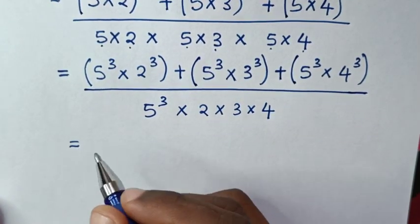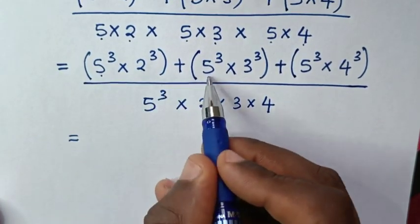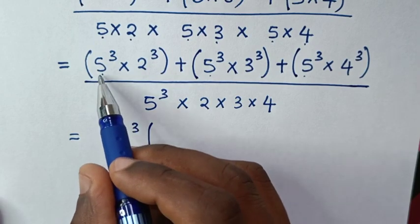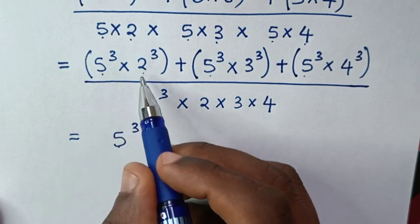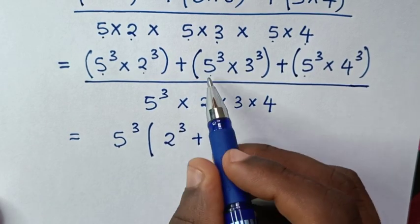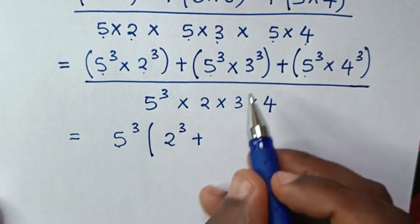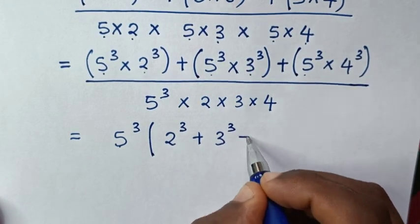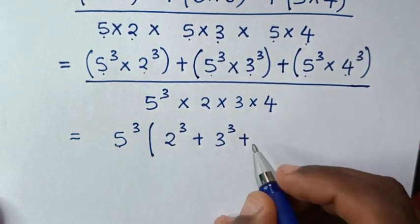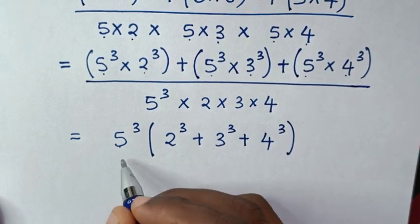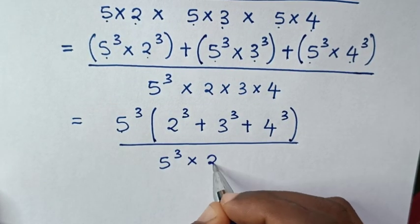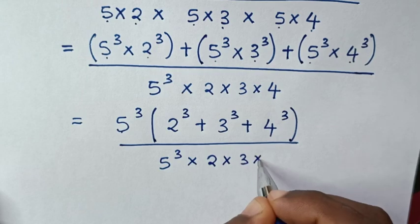In the next step, each numerator term has 5 power of 3 times 2 power of 3, plus 5 power of 3 times 3 power of 3, plus 5 power of 3 times 4 power of 3, over 5 power of 3 times 2 times 3 times 4.